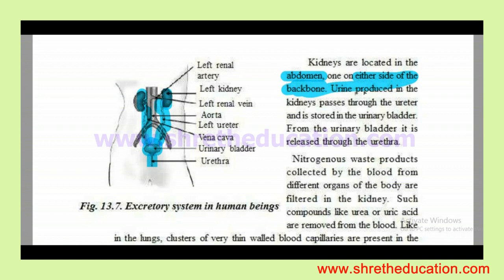Urine is produced in the kidney. It passes through the ureter and is stored in the urinary bladder. The urine stored in the urinary bladder is released through the urethra.